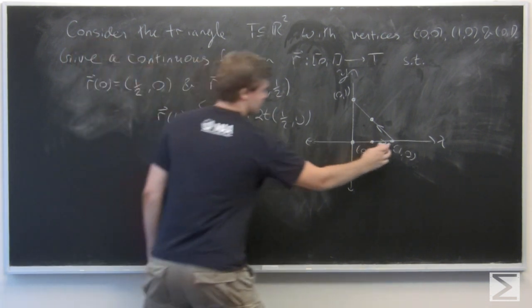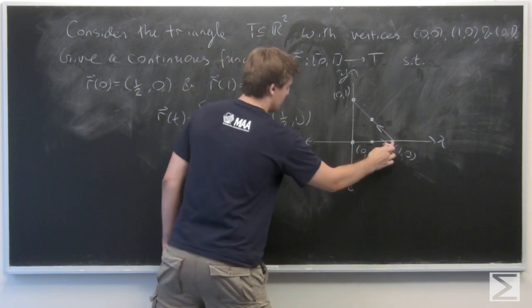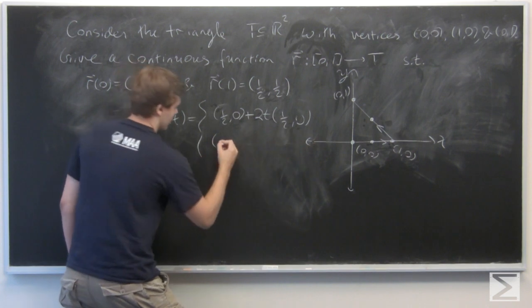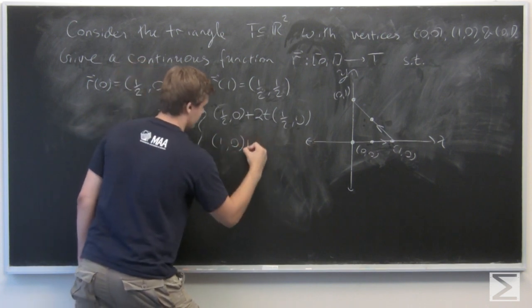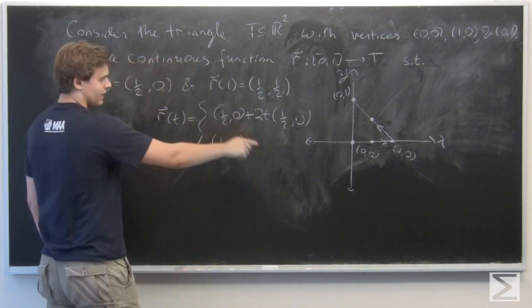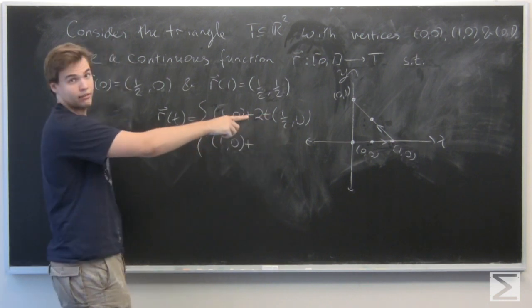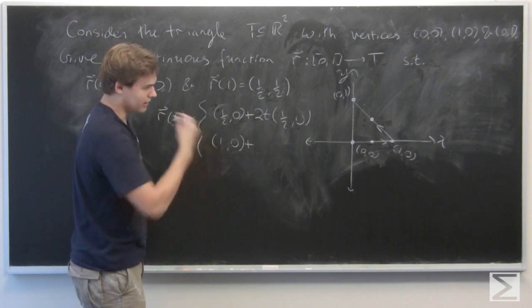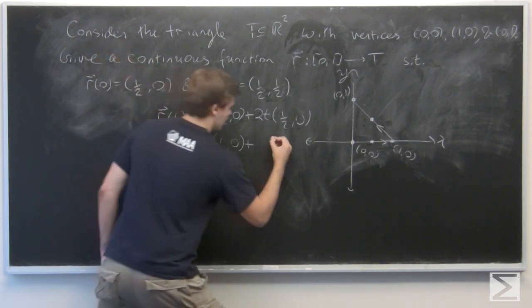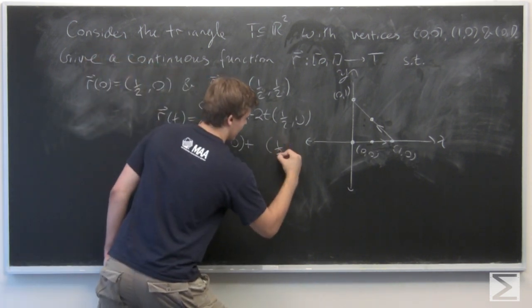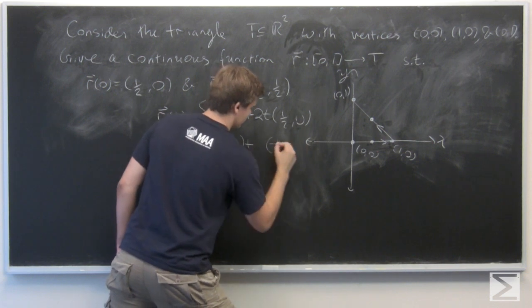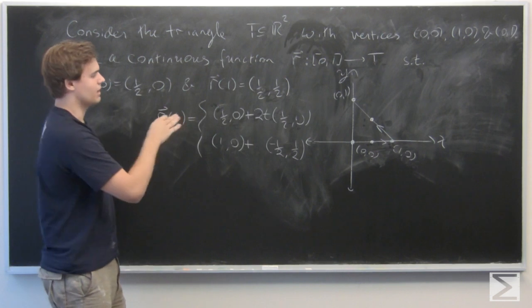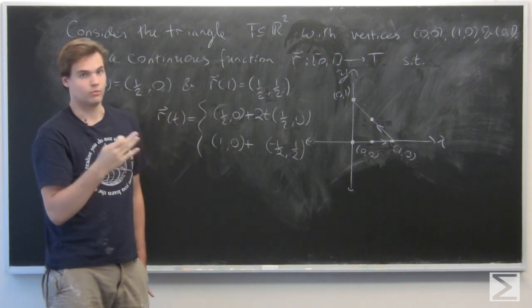And after that, so we're at this point right now at time 1/2, we want to go over here. So we take a point on the line, (1, 0), and then we have to go to (1/2, 1/2). So that's just going to be the vector parallel to that direction, minus 1/2, 1/2, because we're given by (1/2, 1/2) minus (1, 0).